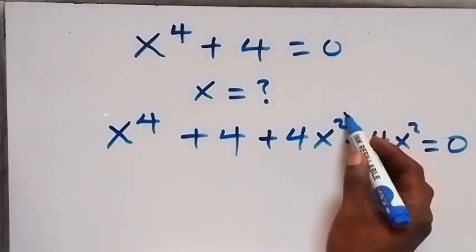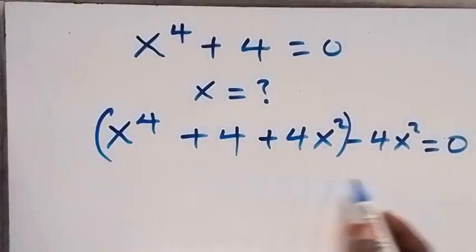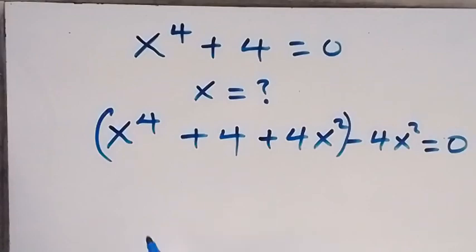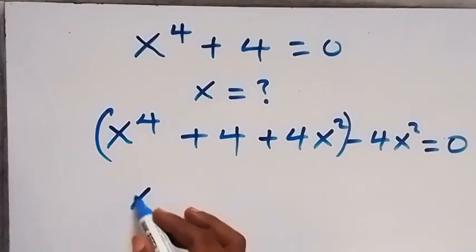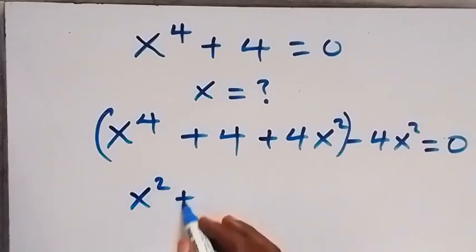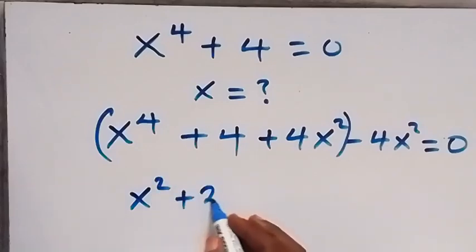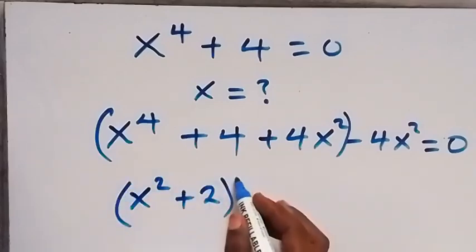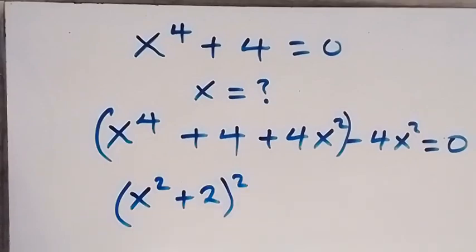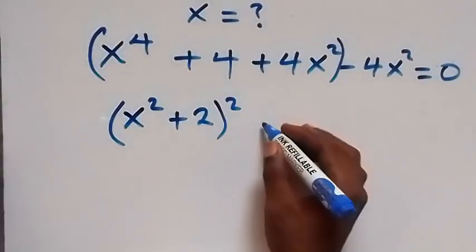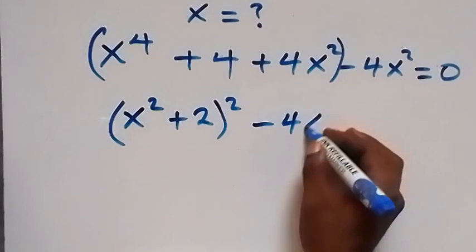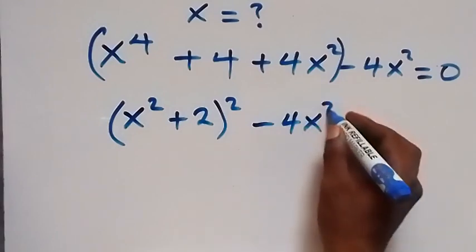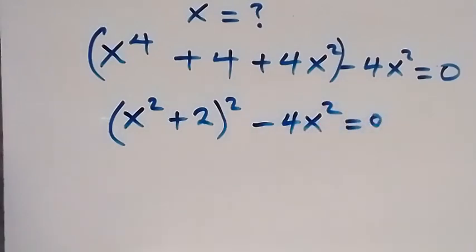Let's group this together. This will simply be (x² + 2)² — the expansion gives us what we have in the bracket — then minus 4x², which equals zero.